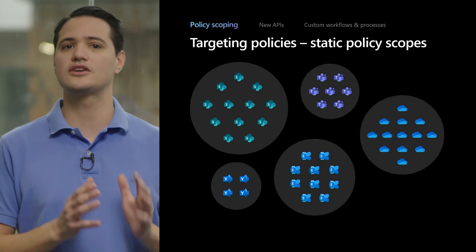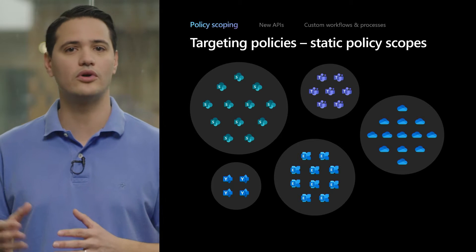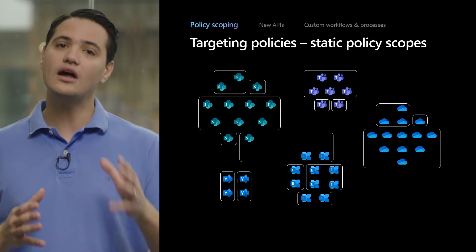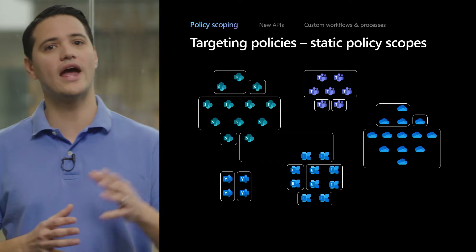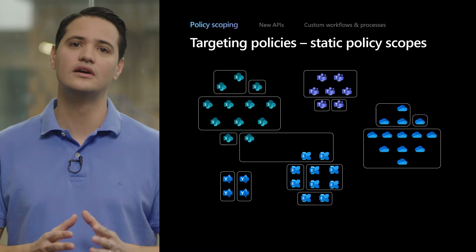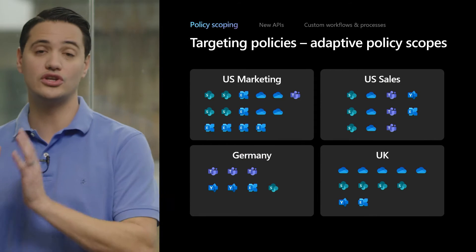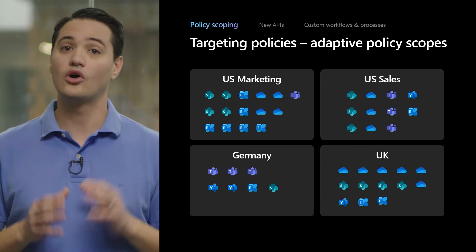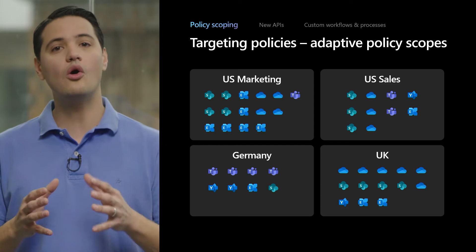When we initially built retention policies and label policies, we envisioned them being used to cover all locations within a certain application like SharePoint or Exchange, and the system was optimized for this use. However, we realized that a lot of customers needed more granularity, and our static policies — which allowed you to manually include or exclude locations — quickly became hard to manage and hit many of our service limits. For this reason, we built adaptive policy scopes, which reorganizes the tenant in buckets based on the user, group, or site attributes and will automatically keep it up to date, so as new people start or transfer between parts of the organization, your policies are always targeting the right locations.